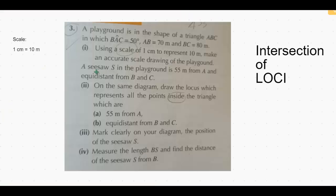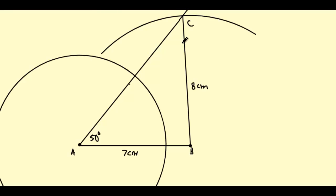The seesaw S is also equidistant from B and C. From the basics of loci, the locus of points equidistant from two points B and C is a perpendicular bisector. Now we will draw a perpendicular bisector of line BC.